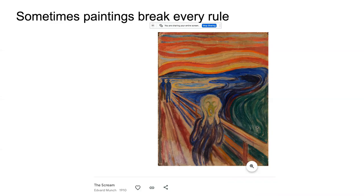Edward Munch's intention was to make a space that made the viewer feel uneasy. He said that when he made this painting, he was walking across a bridge with some friends, stood back for a moment, and saw the sunset turn an incredibly red color. It was so striking — he said it felt like the landscape was screaming at him, that he felt a scream go through nature. A lot of people think the figure in the foreground is screaming because of their mouth, but look — he's covering his ears. He feels as though he's being screamed at by nature.